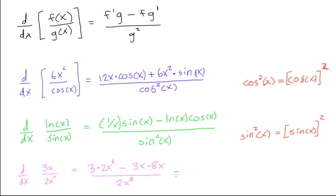And then we could just rewrite this as 6x, 6x to the fourth minus 24x squared, all over 2x to the eighth. And then we could pull out some x's and 2's, but we'll just leave it at that. But the point is just to make sure you understand this here, the quotient rule, and how it works.